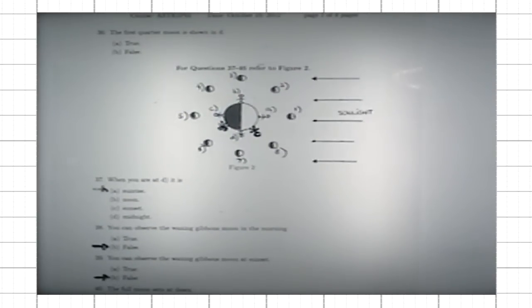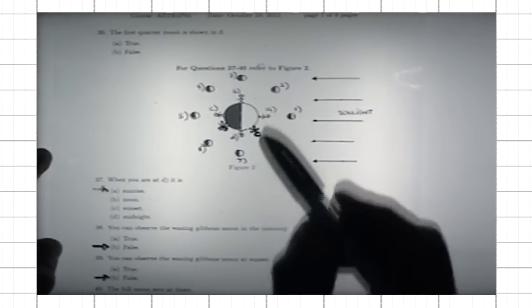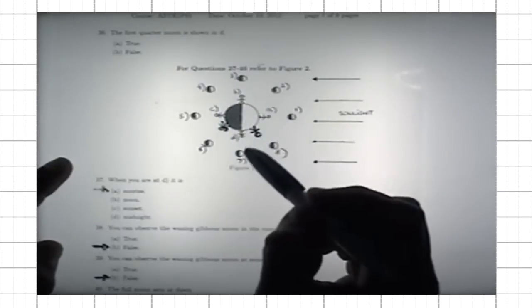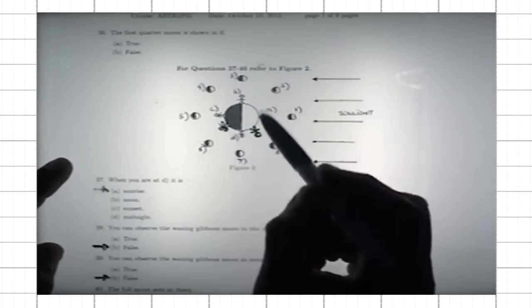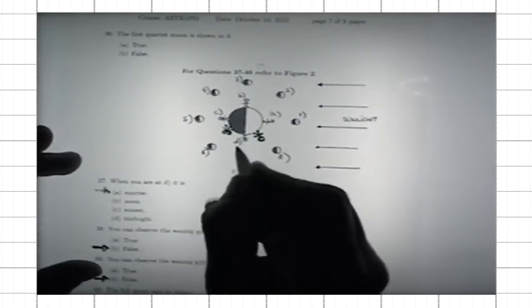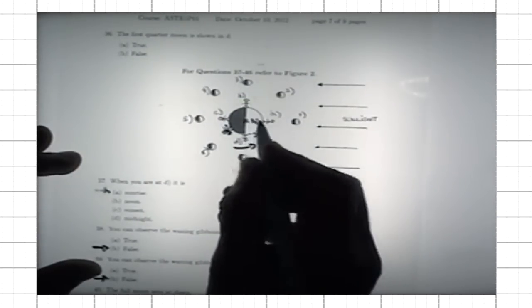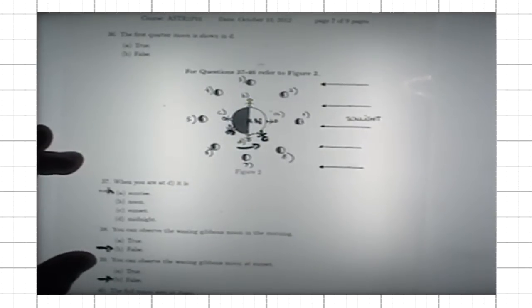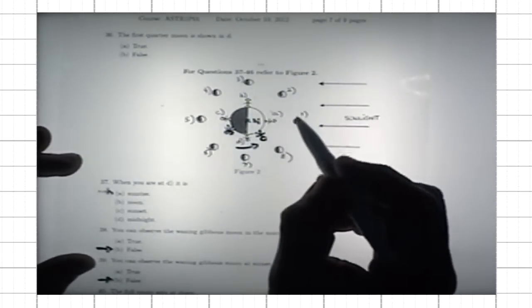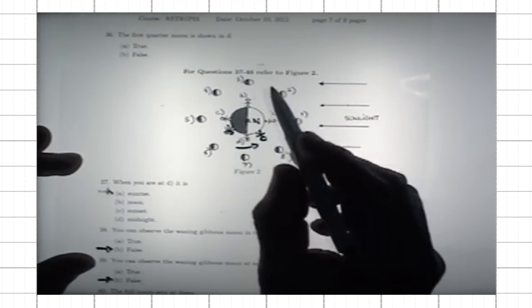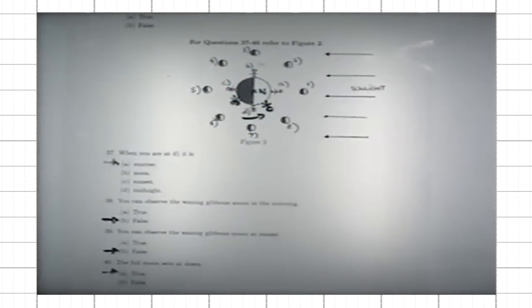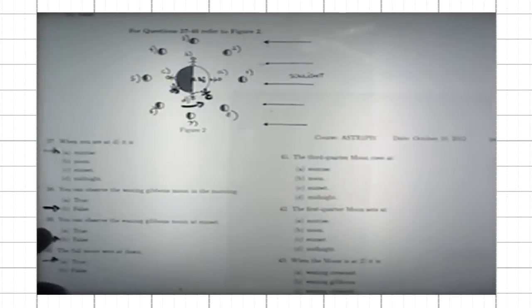We discussed the phases of the moon. What you see depends on the time of day, where you are, and the location of the moon. Keep in mind that the Earth revolves around its axis once every 24 hours, and it takes about a month for the moon to go from one phase back to the same phase — one new moon to the next.